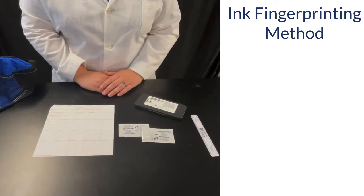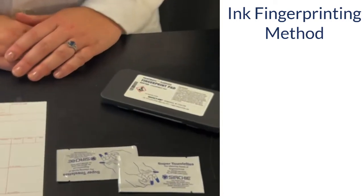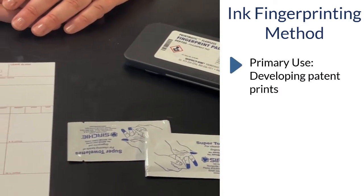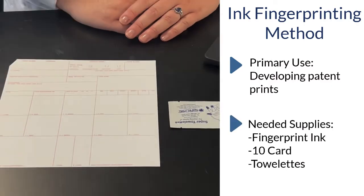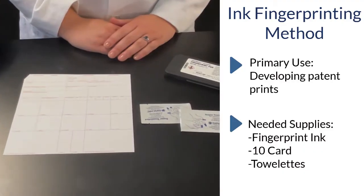We will now review four common fingerprinting methods. Fingerprinting with ink is primarily used for creating patent prints from hands. To develop fingerprints with ink, you will need an ink pad, a tent card to place prints on, and towelettes for cleaning.